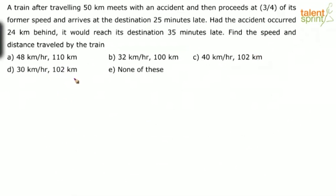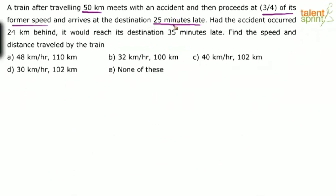First, we'll focus on finding the speed of the train. The train had traveled 50 kilometers without difficulty and then met with an accident. After the accident, it moved at three-fourth of its former speed S. Because of the reduced speed, the time taken to reach the destination increased by 25 minutes.